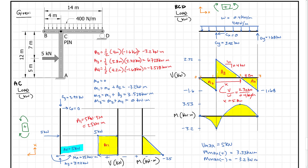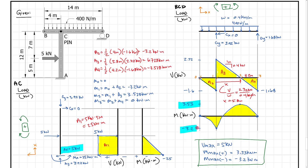Knowing the positive and negative moment values matters for beam design. It affects whether the beam needs bracing — for example, from a floor, bridge deck, or other lateral bracing — and how the beam behaves structurally. So we went through setting local axes, defining the internal sign convention, and finding the maximum shear and moment values.